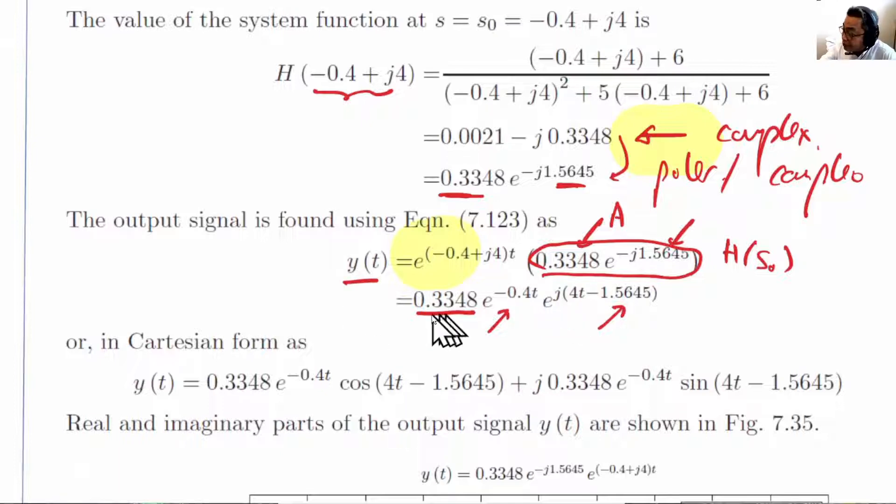y(t) equals 0.3348 e^(-0.4t) times the complex exponential with omega equals 4 and the phase shift equals minus 1.5645, which was gotten by this here.